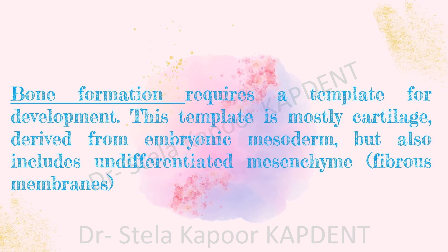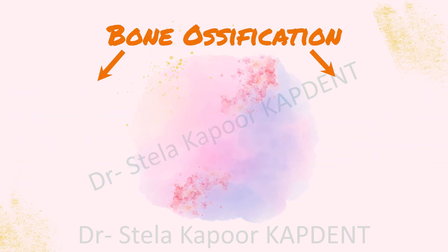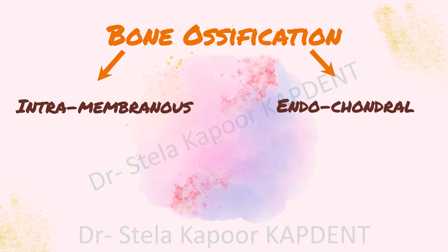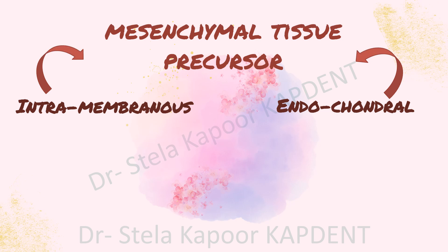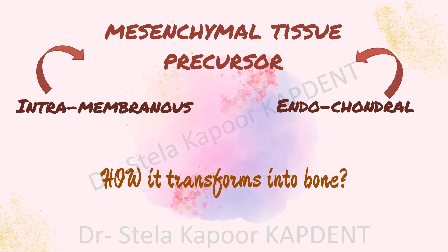The process of bone formation requires a template for development, and this template is usually in the form of cartilage derived from the embryonic mesoderm, but it also includes undifferentiated mesenchyme. Based on this, bone ossification can either be intramembranous or endochondral. Each process begins with the mesenchymal tissue precursor, but differs in how this precursor is transformed into bone.